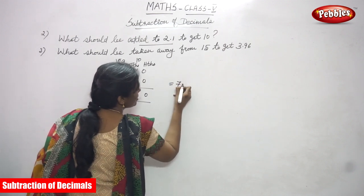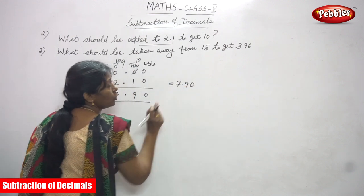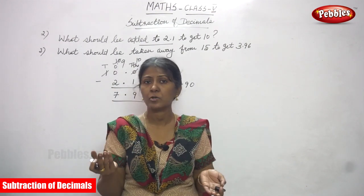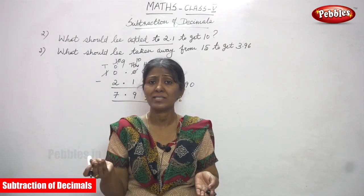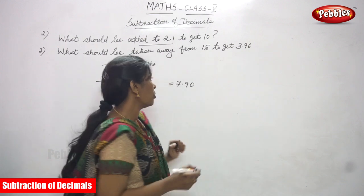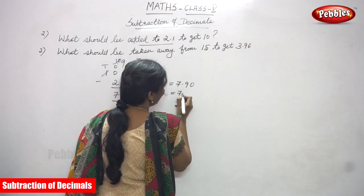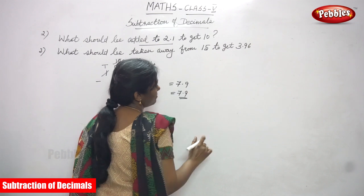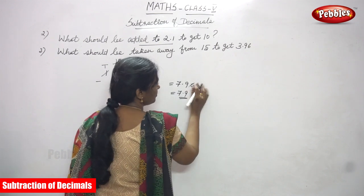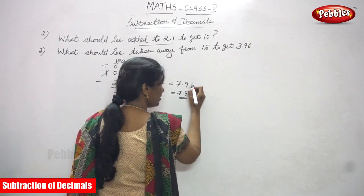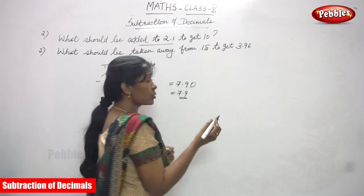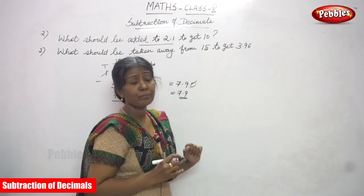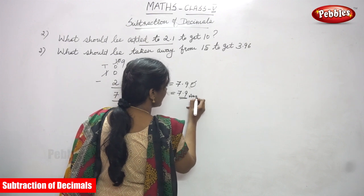7.90. After the decimal point, if you put 0, however many 0s you add there is no value. So, you just write 7.9 — that is sufficient. The trailing 0 after the decimal has no value, so just cancel it. The answer is 7.9.